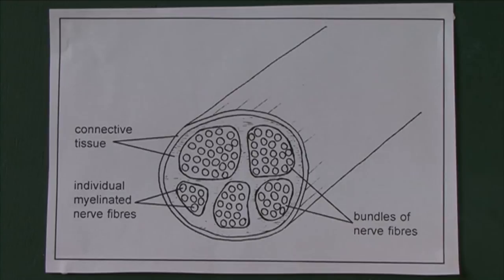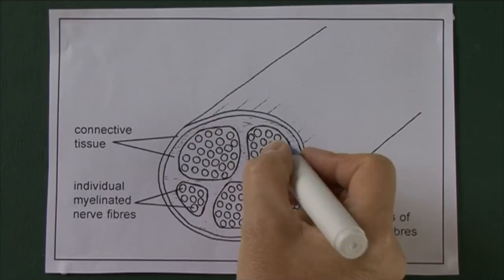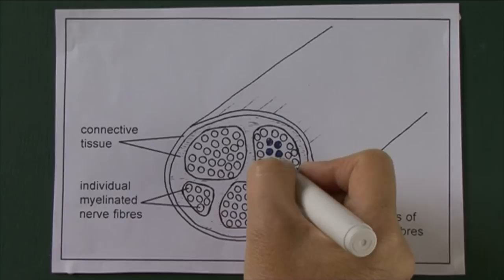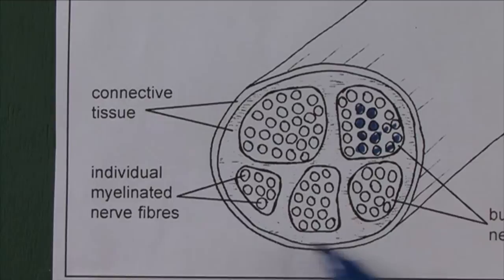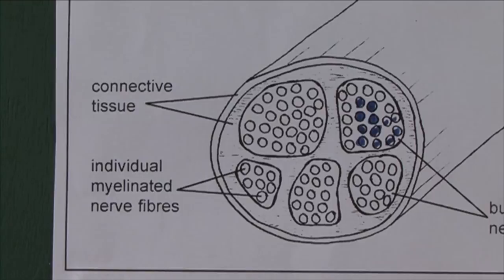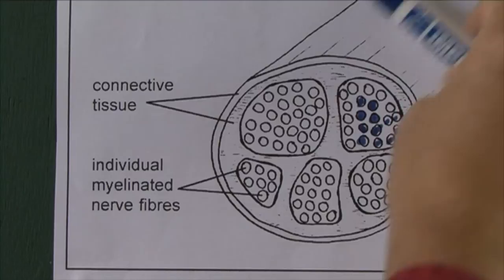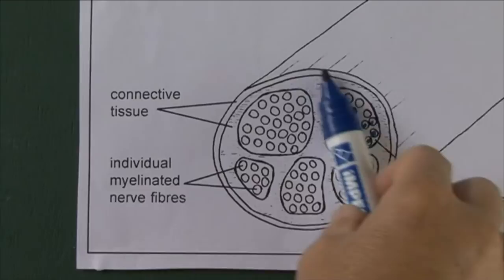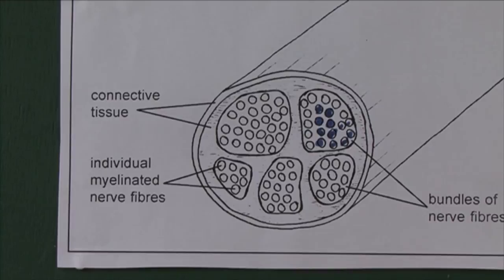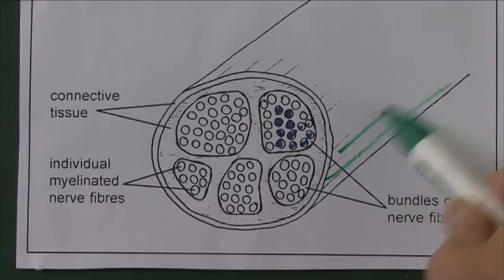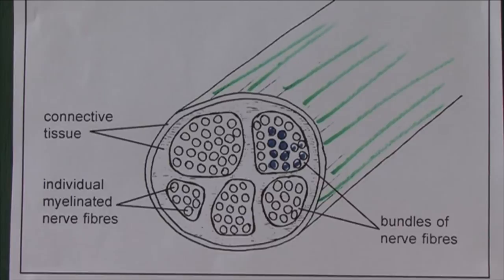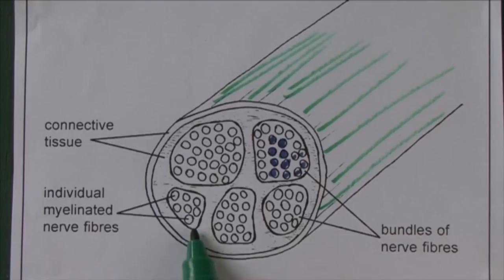The nerve fibres we've been looking at — the axons and the dendrites — are at a cellular level, and therefore they are microscopic. Many individual nerve fibres bundle together to form macroscopic nerves. Nerves very often have a whitish appearance in the body because of the fatty nature of the connective tissue, providing electrical insulation and protection for the individual nerve fibres within the macroscopic nerve.